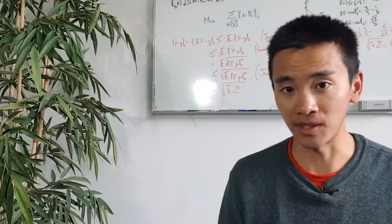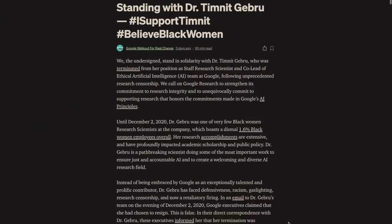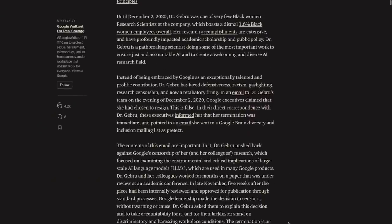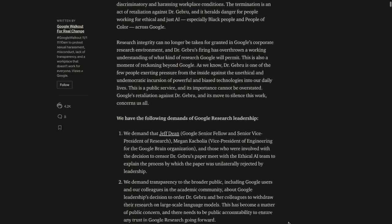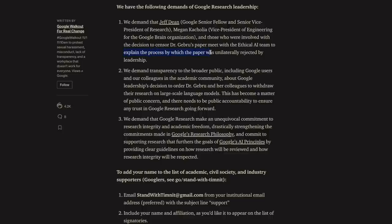But there is some good news in all of this, and even a great news. Following Timnit Gebru's dismissal, Google employees wrote a collective open letter protesting the dismissal and demanding three things from their management: one, more explanation about the censorship of the publication; two, more transparency towards the general public, including you and me; three, a unique local commitment to research integrity and academic freedom and respect for the principles of Google's research philosophy and Google's AI principles.